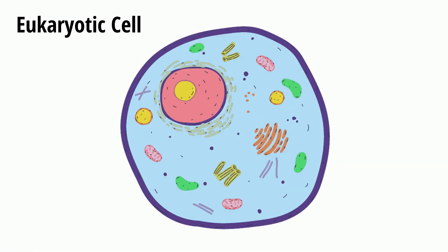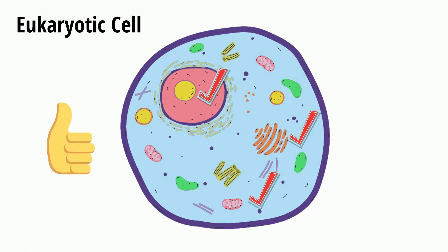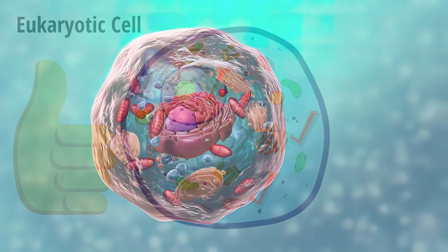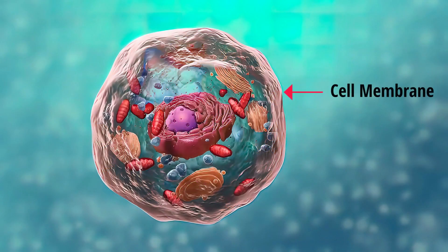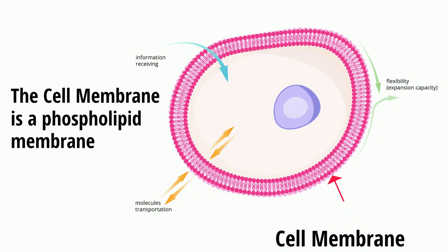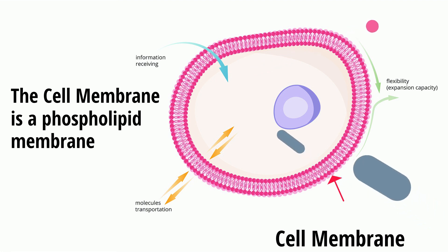Eukaryotic cells contain a nucleus and have membrane-bound organelles. Let's take a look at the major organelles of a eukaryotic cell and their functions. Up first is the cell membrane. The cell membrane is a membrane that surrounds the cell. This membrane allows certain things to enter and exit the cell. Think of it as a protective barrier.